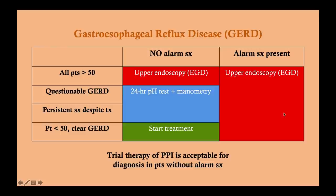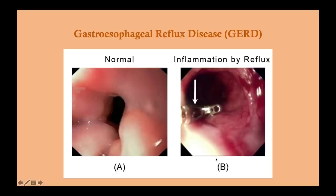This is what GERD looks like on endoscopy. A normal esophagus is nice and pink — peach-colored. With inflammation from reflux, you see erosion of the esophagus. The instrument visible in the image appears to be taking a biopsy. You will perform a biopsy during EGD because you are checking for Barrett's esophagus.